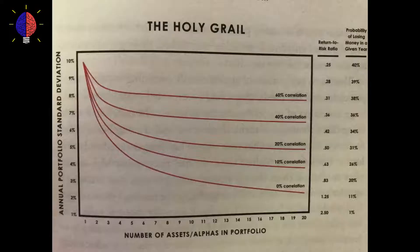We're going to take a look at the holy grail of investing graph, break it down, and simplify it so we can better understand the key ideas and key points to take away from it. Then we're going to walk through some examples. Don't be scared of the chart — we're just going to take a look and really simplify what it actually means, then see how we can apply that to investing. On the left-hand side of the graph we see annual portfolio standard deviation, which is a measurement of how we measure the amount of risk we're taking on.